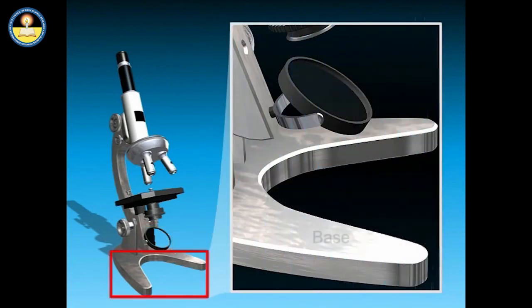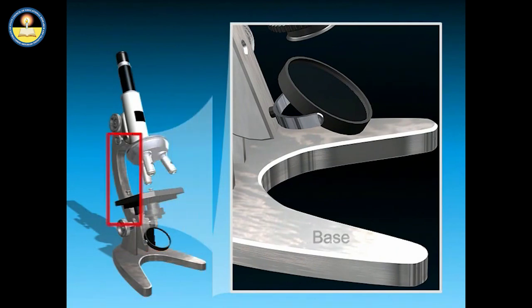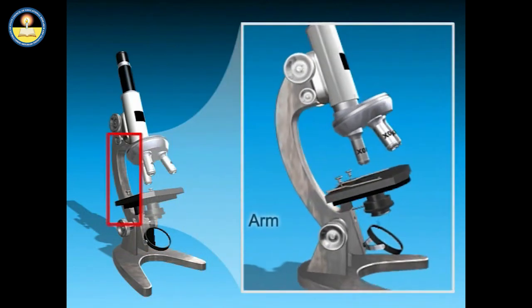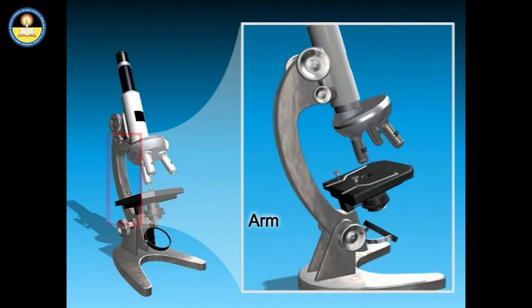The base of the microscope stabilizes the apparatus. The arm connects the upper part of the microscope to the base.